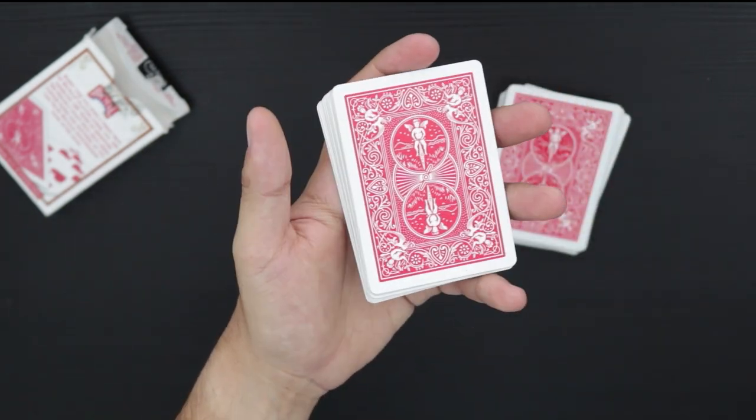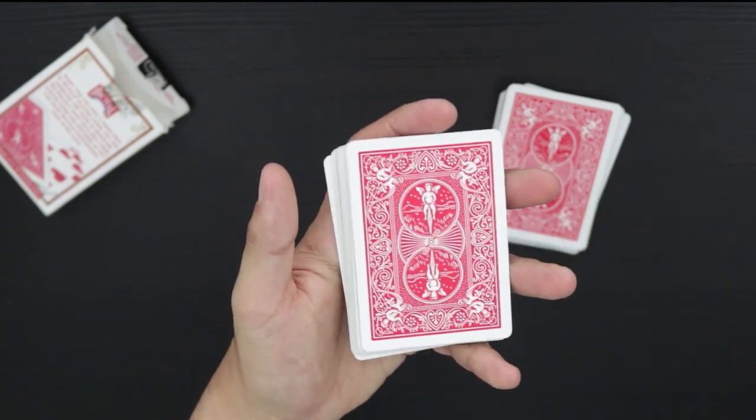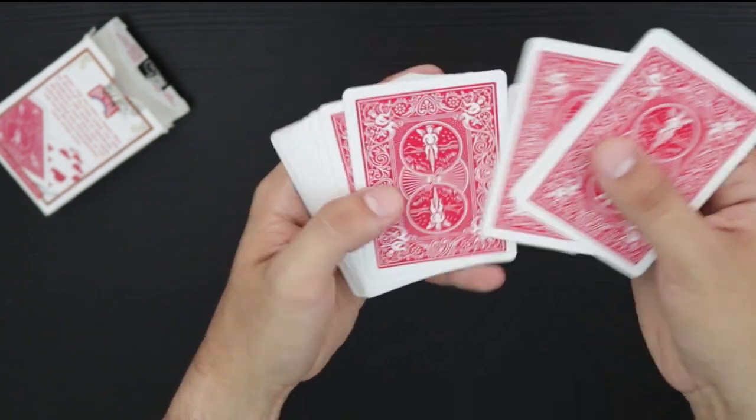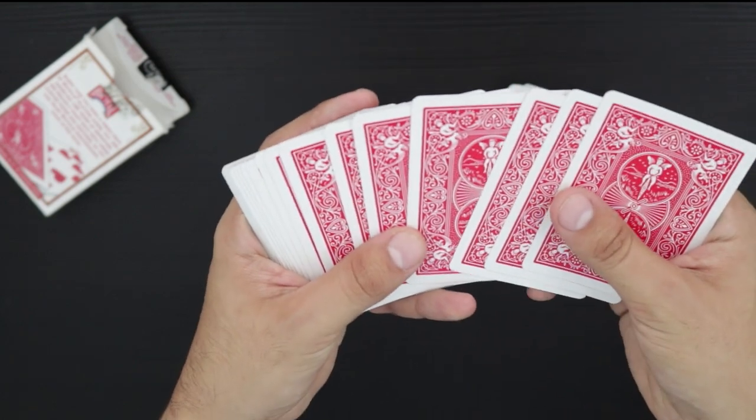And what's going to happen is that depending on the card they named, you're going to just spread to that card and call it right to the bottom of the stack here. That's the original John Carney force.